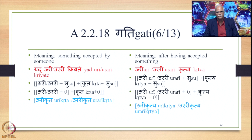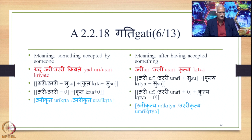If the meaning is 'something accepted by someone' — Yad Uri Kriyate — we have Uri or Urari plus Su, plus Krita plus Su. Now Samasa Saudhnya takes place, then Pratipadika Saudhnya, and Supodhatup Pratipadika Yoho applies. So we have Uri or Urari plus zero, plus Krita plus zero. Finally we get the compound in the form Uri Krita or Urari Krita. This is also a Nitya Samasa meaning the same as Yad Uri or Urari Kriyate.